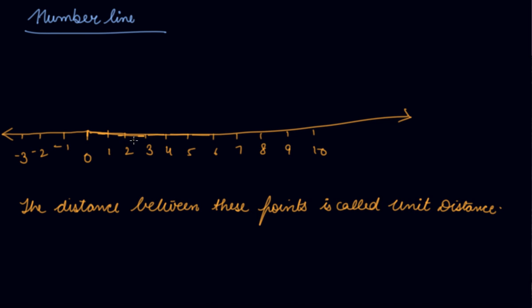You will take a scale, draw a line, and start from 0. Using the scale, from 0 to 1 you mark 1 unit, then 1 to 2 another unit, then 2 to 3 another unit. In this way, you will get equal distance on the number line.